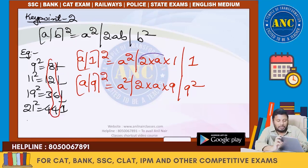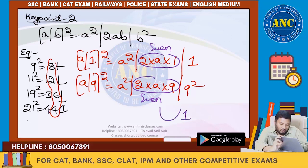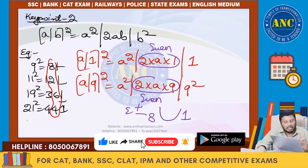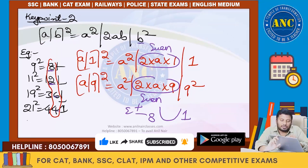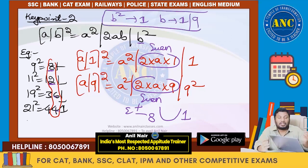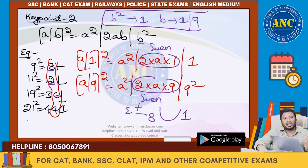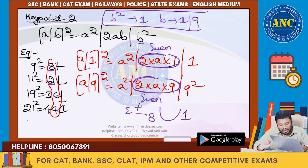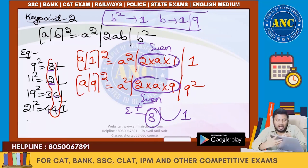The tens place comes from 2 multiplied by any number, which is always even. For example, 9 square is 81: unit digit 1, and 8 is carried — 8 is even. Even plus even is even. Therefore, any perfect square ending with 1 will always have an even digit in the tens place. The proof is that 2 into any integer is always even, and carrying from b square also contributes an even amount.